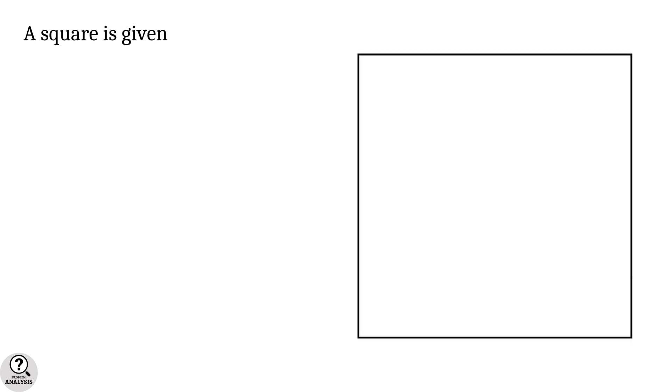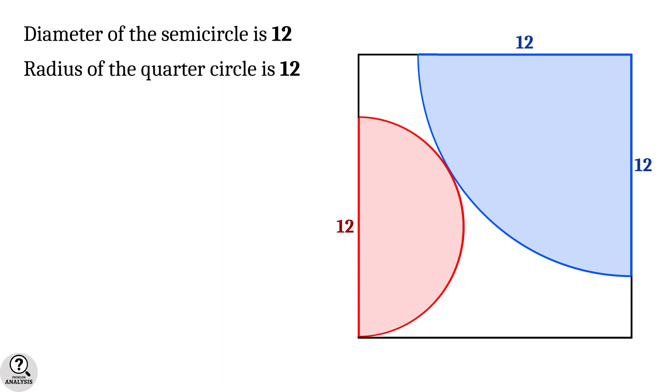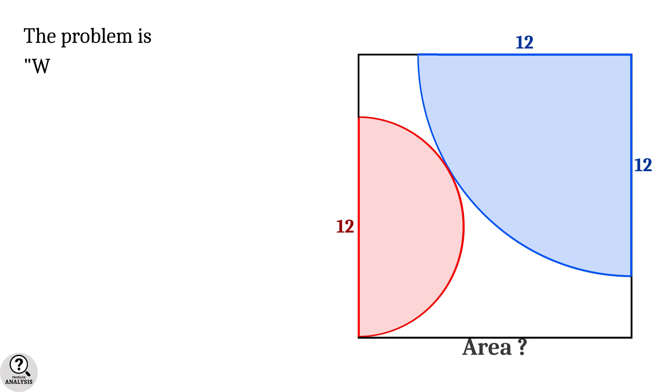Consider a square, a semicircle, and a quarter circle, both touching each other, drawn inside the square as given in the figure. The diameter of the semicircle is 12 units, and the radius of the quarter circle is also 12 units. Then my problem is, what is the area of the square?